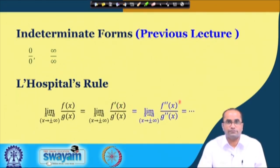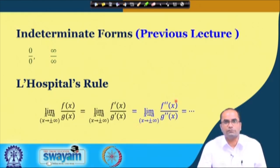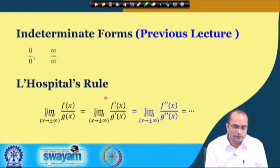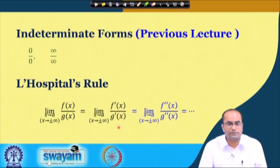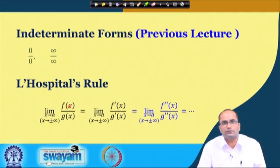We can continue this process of differentiation provided all conditions on f' and g' are satisfied — that is, when f' and g' both go to 0 or both go to infinity. An important point: if the limit of the ratio of derivatives does not exist, we cannot claim the original limit does not exist either.